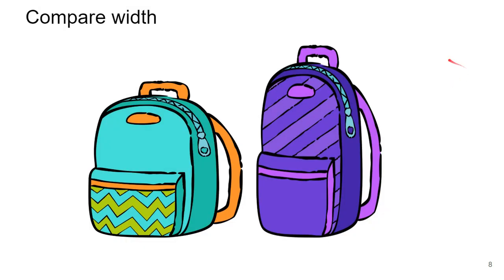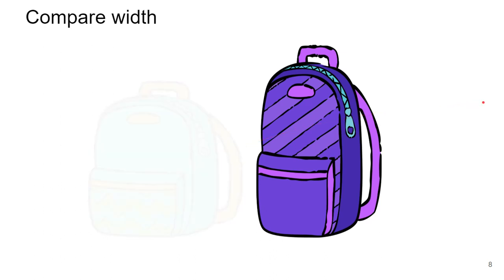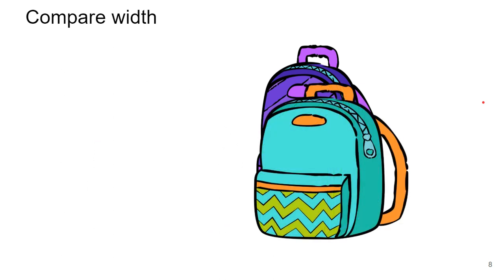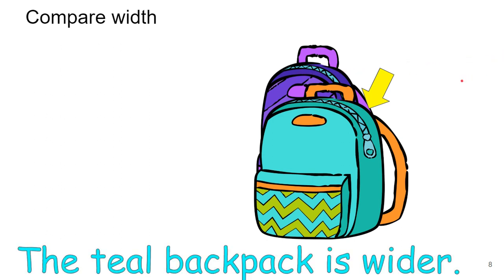So let's compare the width. So remember, the width is from one side to the other. So that would be the way that we measure that one. It is easier, though, to see the width when you're actually measuring it. If you put one on top of the other, right? So we can see here that this teal backpack is over the purple backpack. So then we would say the teal backpack is wider.